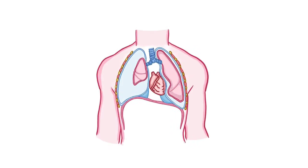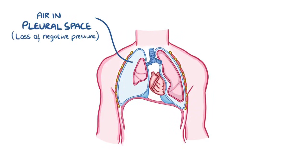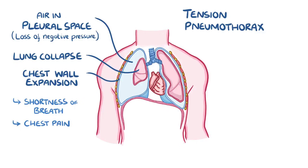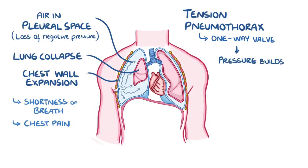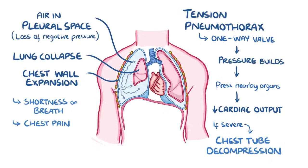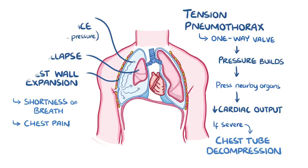As a quick recap: a pneumothorax is when there's air in the pleural space and a loss of negative pressure that leads to lung collapse and chest wall expansion, which can cause shortness of breath and chest pain. A tension pneumothorax involves a flap of tissue creating a one-way valve, allowing pressure to build up over time that can press against nearby organs like the heart and potentially affect cardiac output. In severe cases, a needle or chest tube can be used to decompress the air in the pleural space.